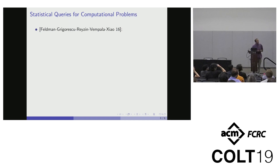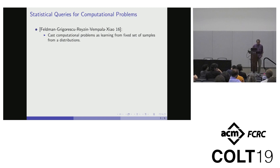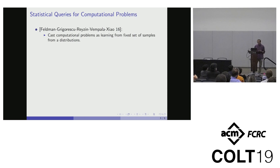Recently, there's been work trying to use the statistical query model to show hardness for certain computational problems. This was done by Feldman, Grigorescu, Reiss, and Ben-Palangell. Basically, if you can cast your computational problem as learning from a fixed set of samples from a particular distribution, then you could hope to get some hardness results by showing that your algorithm can't work in the SQ model. This basically suggests that all these algorithmic approaches which we know how to implement with SQ queries are doomed for these problems. In particular, they did this successfully for the planted clique problem.